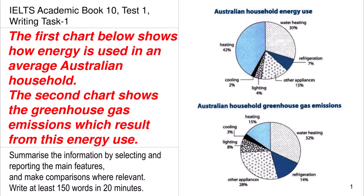Today we are going to be discussing the IELTS Academic Book 10 Test 1 Writing Task 1. The first chart below shows how energy is used in an average Australian household, and the second chart shows the greenhouse gas emissions which result from this energy use. Summarize the information by selecting and reporting the main features and make comparisons where relevant. Write at least 150 words in 20 minutes.